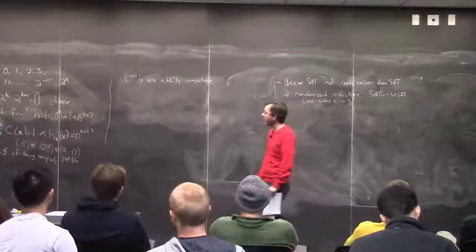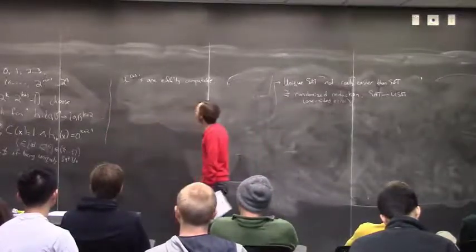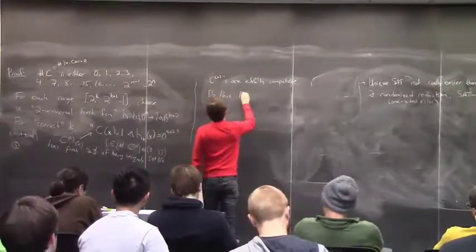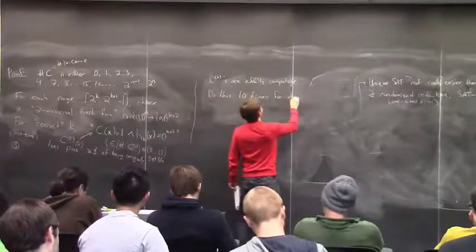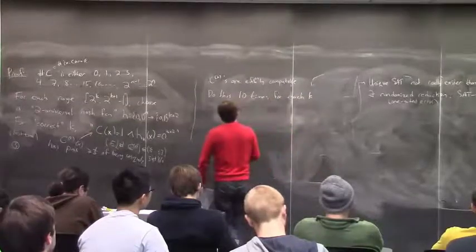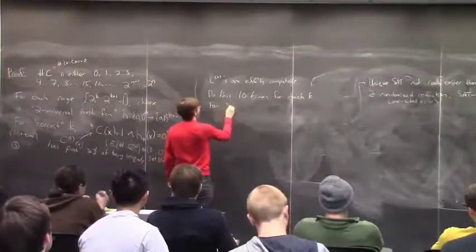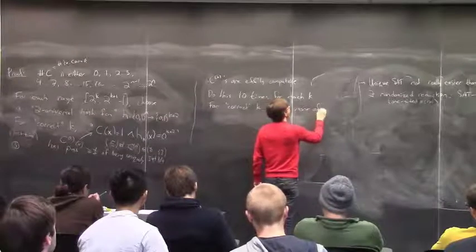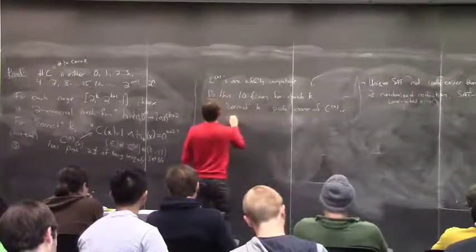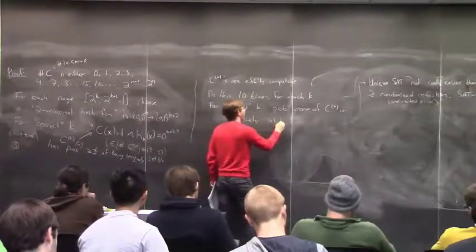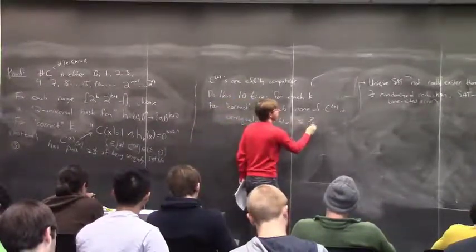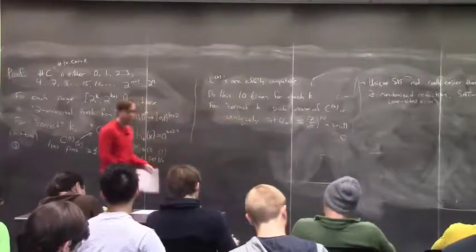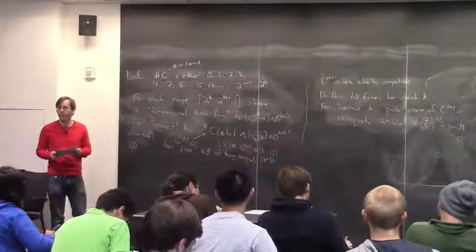So we output all these C_k's, which are efficiently computable. If C is not satisfiable, certainly none of them will be satisfiable. If C is satisfiable, then for the correct k there's at least a 1/8 chance of being uniquely satisfiable — so we have this with high probability. To boost probability: just do this 10 times for each k. That increases T by a factor of 10. For the correct k, the probability that none of the C_k's is uniquely satisfiable is at most (7/8)^10.